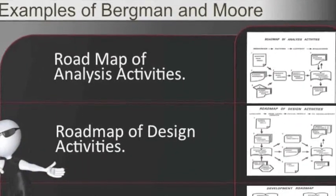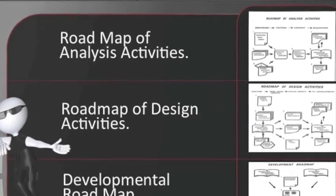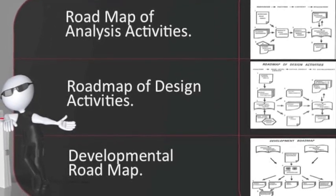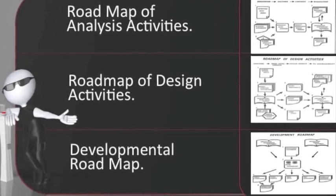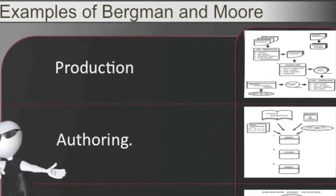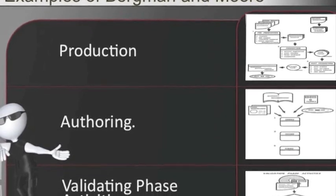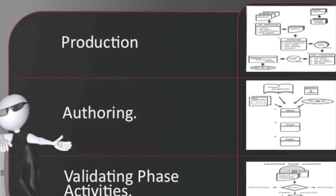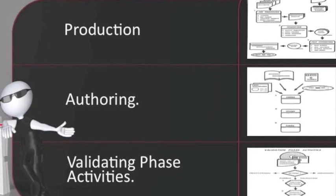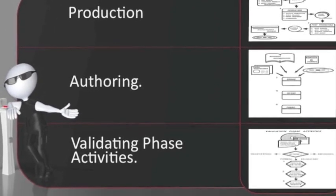Also included are examples of the overall activities — for example, the roadmap of analysis activities, the roadmap of design activities, the development roadmap, the production authoring roadmap, and validating phase activities. These can all be seen as basic overviews of how the Bergman and Moore model flows, operates, and runs together.